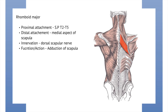The rhomboid major has a proximal attachment at the spinous processes of T2 to T5, and its distal attachment is the medial aspect of the scapula. It is innervated by the dorsal scapular nerve, and its function is to adduct the scapula.